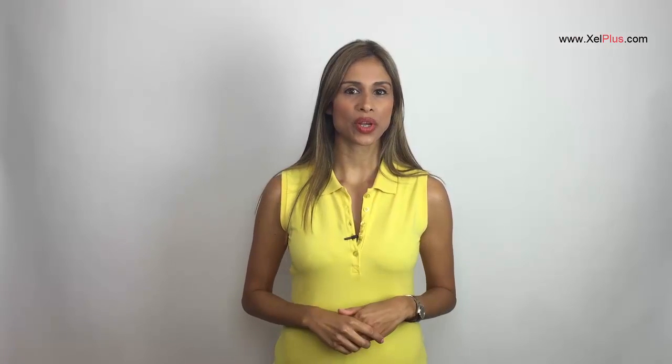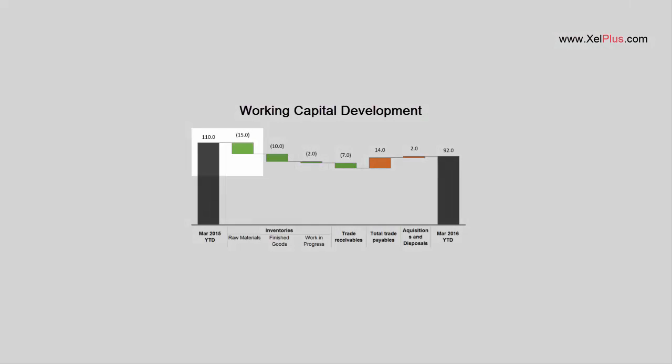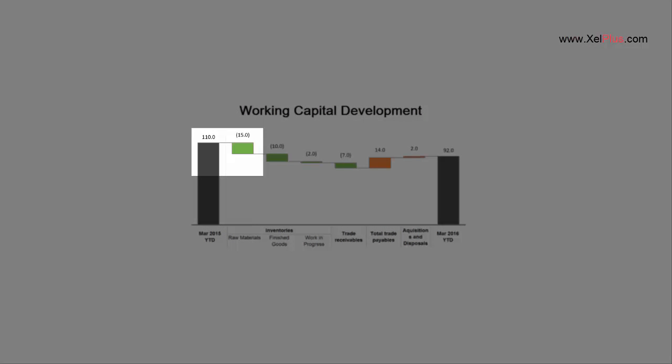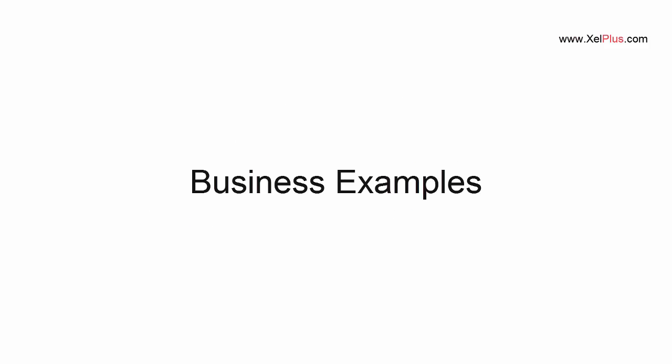The waterfall is also not just for financial figures. You can use it to explain changes in statistical data — for example, changes in headcount: how many new employees you hired, and how many resignations and retirements your company had during the year. In my view, one feature that makes the waterfall a good storyteller is the connectors. These connectors connect the delta bars to one another and they have the effect of grouping the bars, which visually indicates that they belong together and that they're all part of the same story.